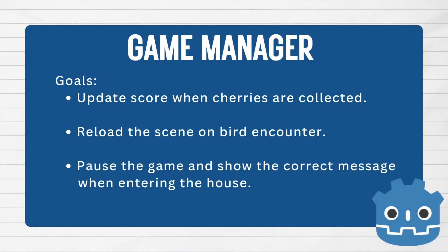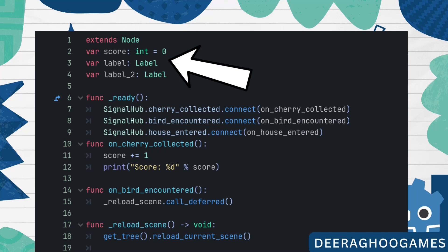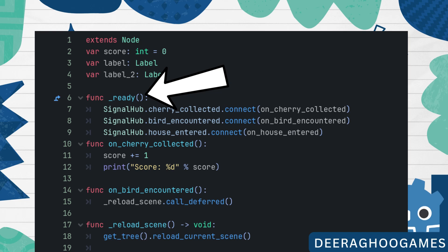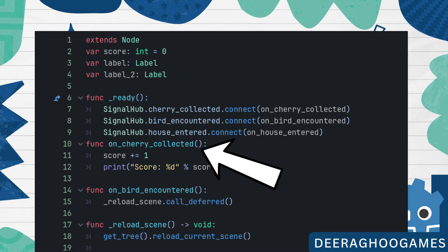Now that we have the signals emitting, let's look at what the game manager needs to do. We set up some variables: first an int for score since we want to increase it by one when a cherry is picked up, and then variables for the labels. In the ready function we connect to the signals we set up earlier. We do this by accessing SignalHub and the signal we want to subscribe to, then dot connect, calling whatever function we'd like. For cherry, we write SignalHub.cherry_collected.connect() and call on_cherry_collected, which adds one to the score and prints it. Then we do the same for the other signals — connecting bird encountered to on_bird_encountered, which reloads the level.